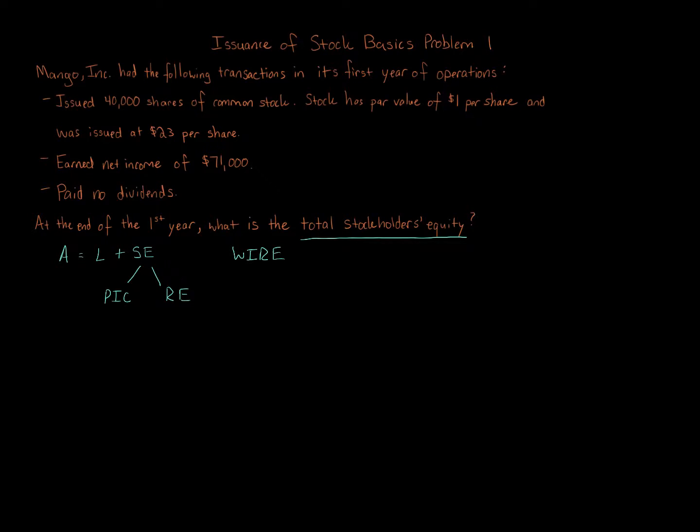The W for withdrawals is the same idea in a corporation as dividends—when owners take money out of the business. The I is investments, which is the paid-in capital section. That's the issuance of stock, whether common or preferred, at par value, in excess of par, or no par.